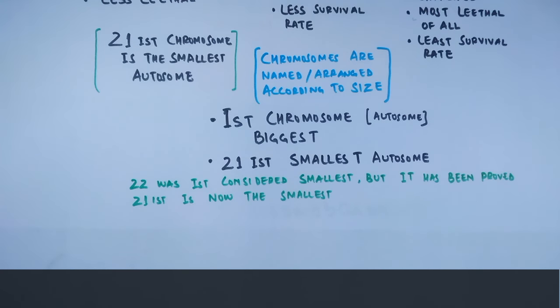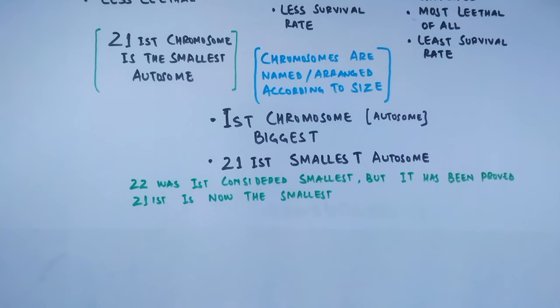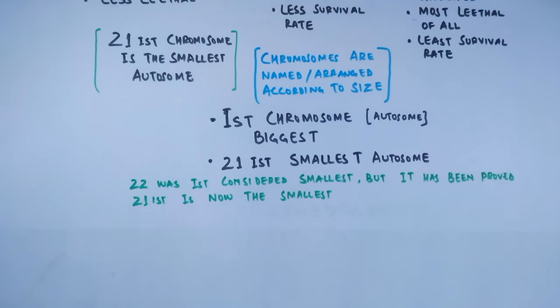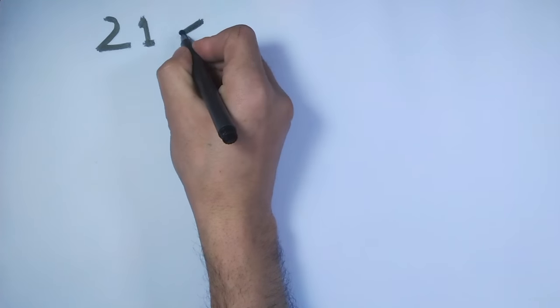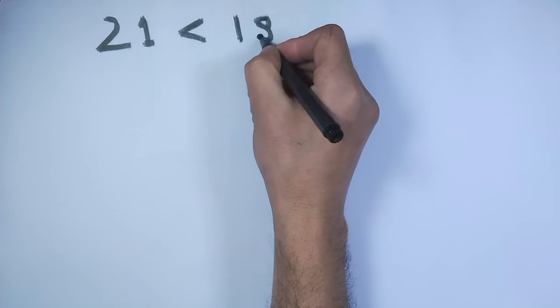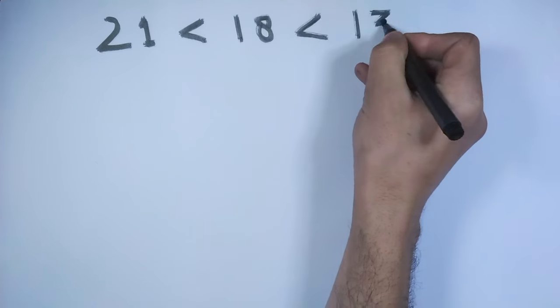Initially it was considered that the 22nd chromosome was the smallest, but it has since been proven that the 21st is the smallest chromosome. The naming has been kept the same after this discovery in order to avoid confusion. So if we order the three trisomies by chromosome size: the 21st is smallest, the 18th is bigger than the 21st, and the 13th is the largest of all three.